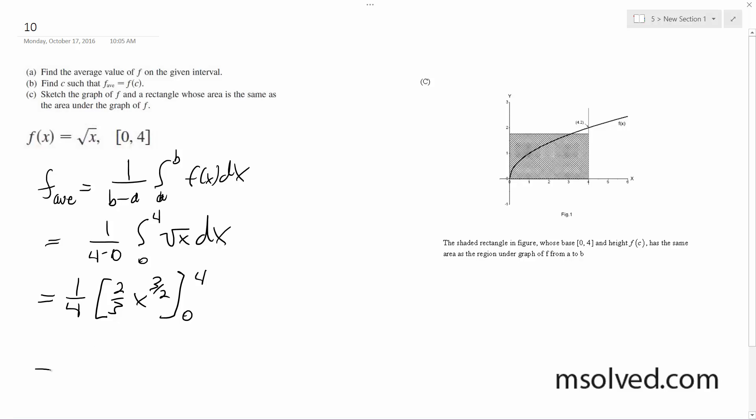We have 1/4 times 2/3. Plug in 4, we end up with 8. And then 0 gives us 0.